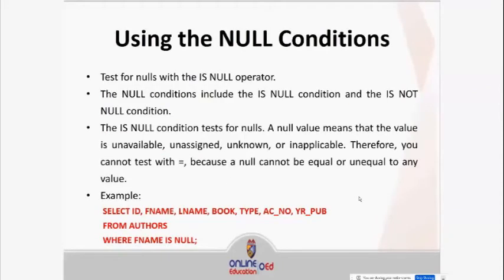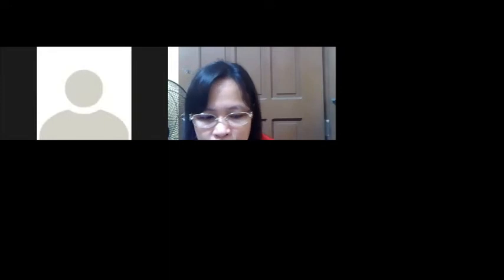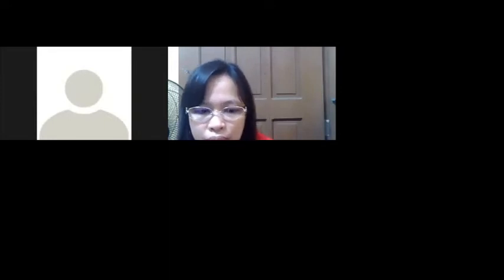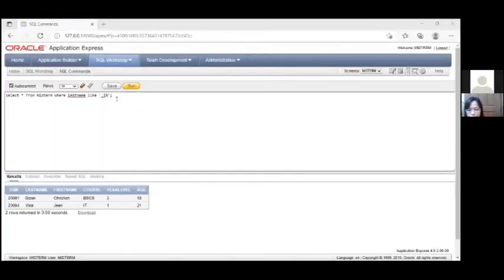Next is the NULL condition. Test for nulls using the IS NULL operator. The null condition includes the IS NULL condition and the IS NOT NULL condition. IS NULL tests for null values. Let's try this using a table that has null values — we'll call: SELECT * FROM m WHERE com IS NULL.